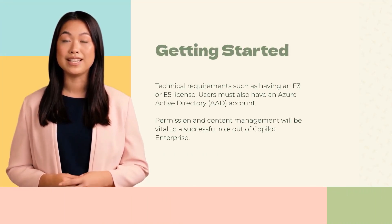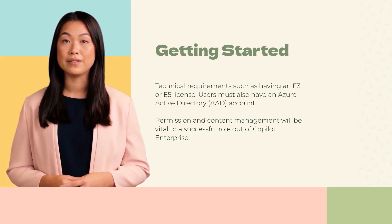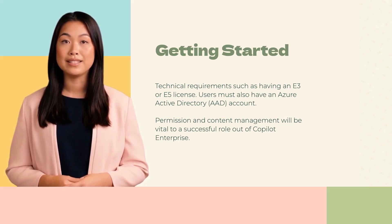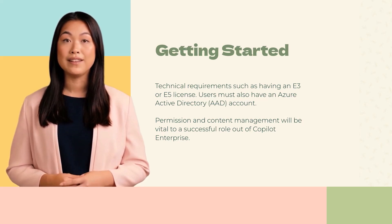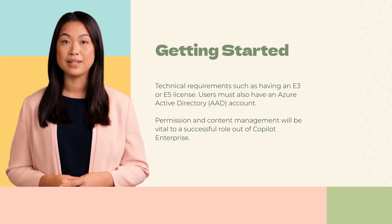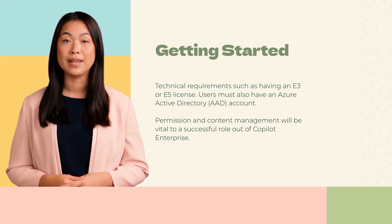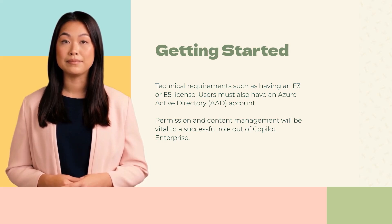Now that you have a better idea of what Copilot Enterprise is and how it can benefit your organization, let's look at how to get started. First are the technical requirements, such as having an E3 or E5 license. These licenses give users access to Microsoft 365 apps and services that work with Copilot, including Word, Excel, PowerPoint, OneDrive, Outlook, Loop, and more. Permissions and content management play a vital role, determining who can use Copilot and how, ensuring your organization's data is used appropriately and securely. Contact us to learn how our team at MPP can help with your Copilot Enterprise implementation.